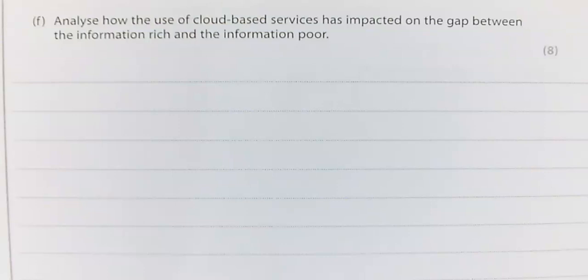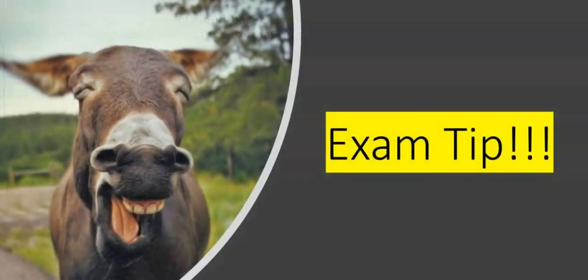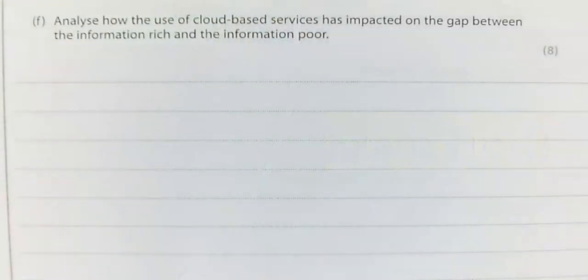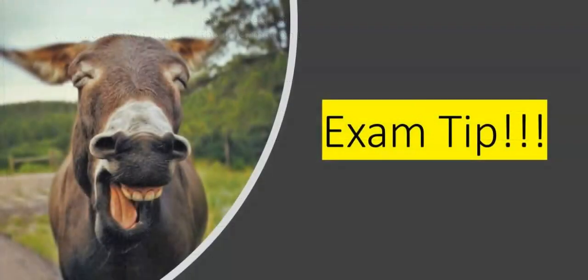Now here we've got an 8 marker, and it needs you to write quite a bit for this. Exam tip: candidates failed to gain marks from the higher mark bands when they listed what services can do and the causes of the gap rather than the impact on the gap. I'm looking at cloud-based services and the impact on the gap between the information rich and the information poor.